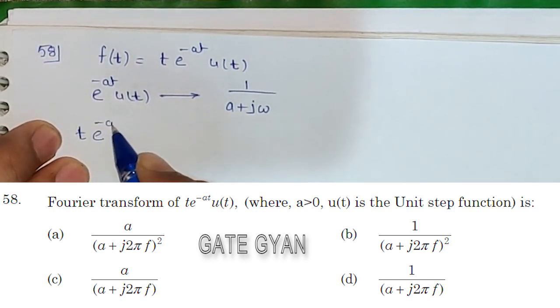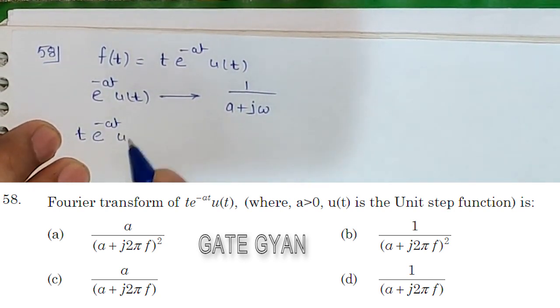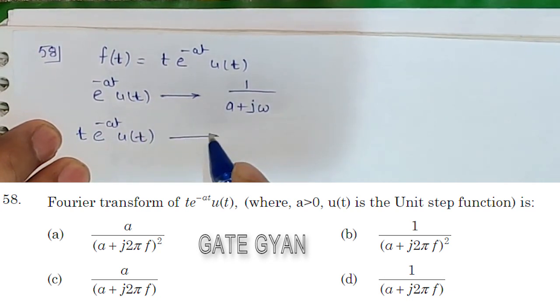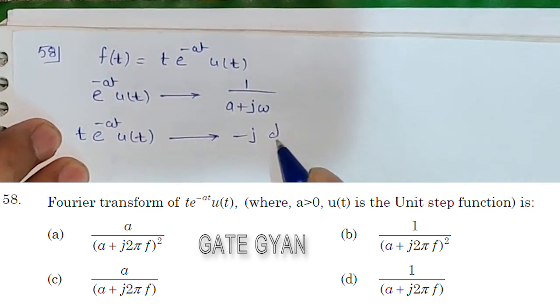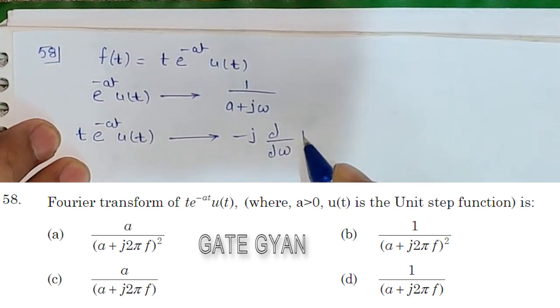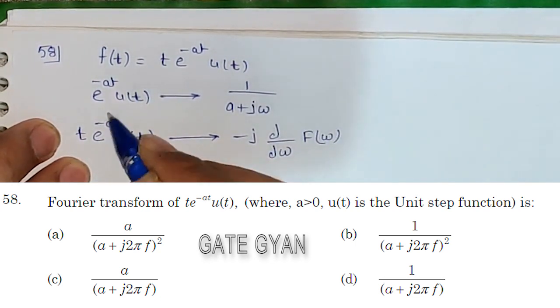To find the Fourier transform of t·e^(-at)·u(t), we use the property that it equals -j·(d/dω)·F(ω).